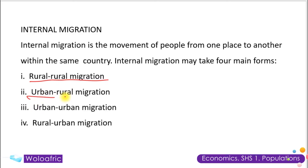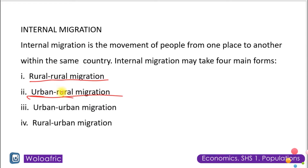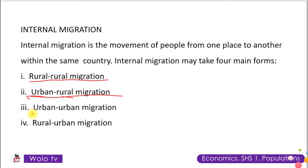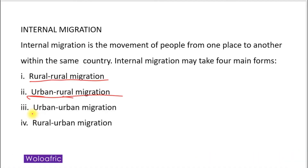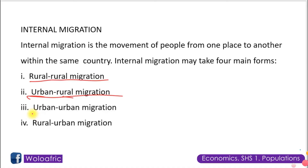Another type is what we call urban-rural migration. By the name urban-rural, it means that the person moves from an urban area to a rural area — so they move from the city to the village or to a rural area.